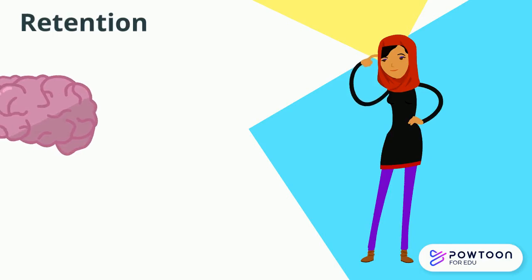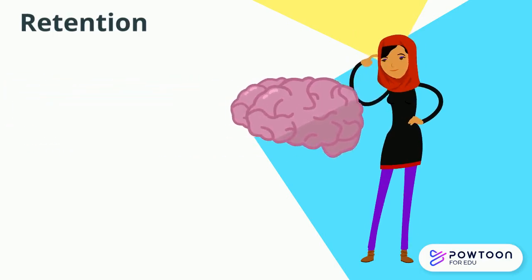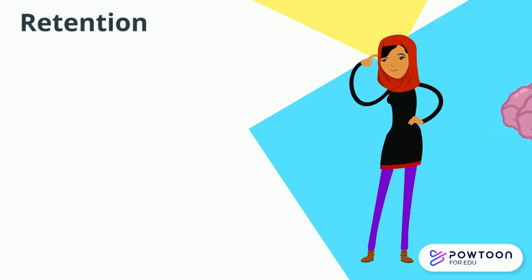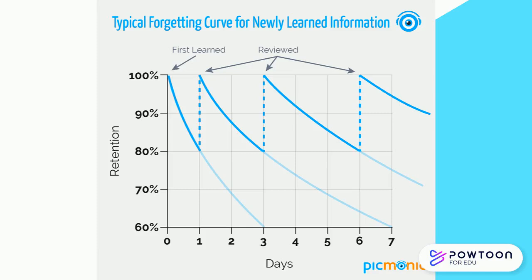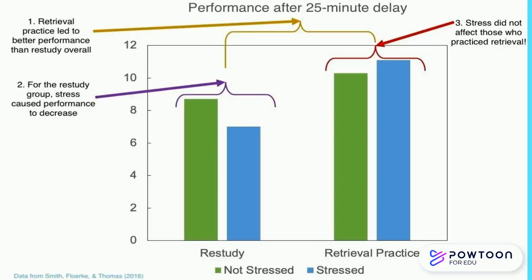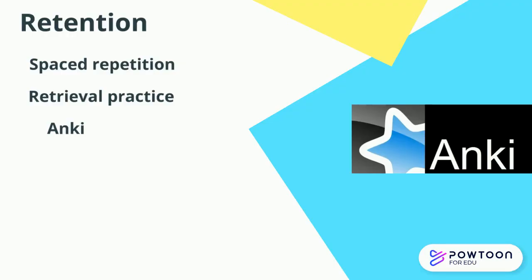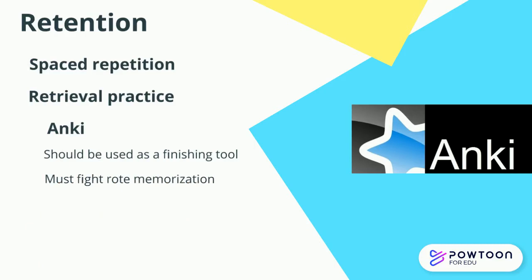Retention strategies. If you're going to be spending effort and time to start prepping now, you must consider how to retain the information you're learning long-term. Two strategies proven to help with retention are spaced repetition and retrieval practice. Spaced repetition is seeing the content you're studying broken up over several sessions, rather than all in one sitting. Five hours of studying spread out over two weeks is much better than the same five hours in one sitting. Retrieval practice is simply bringing information to mind from memory. Anki automates these two strategies, but it also has its pitfalls. Anki should really be used as a finishing tool and not as a primary resource. Also, Anki can lead to rote memorization, which creates a problem if the content you're learning is presented in a novel way on a different question — and this will happen. Odds are you're not going to see the question asked in the exact same way that your Anki deck asked you.